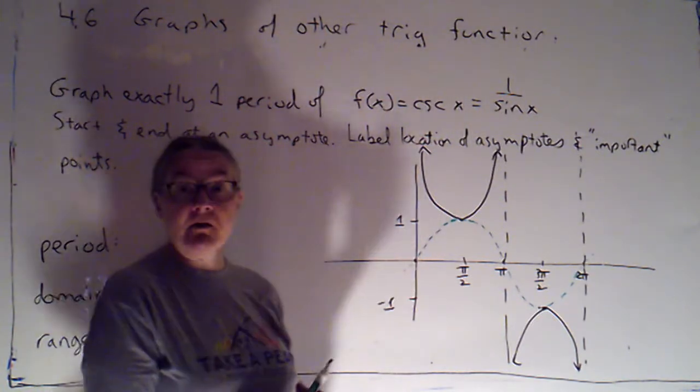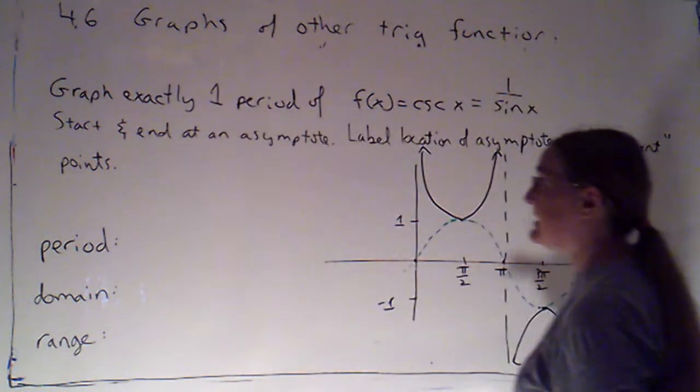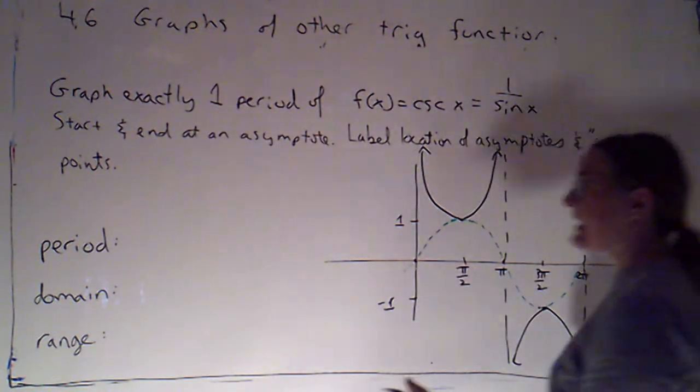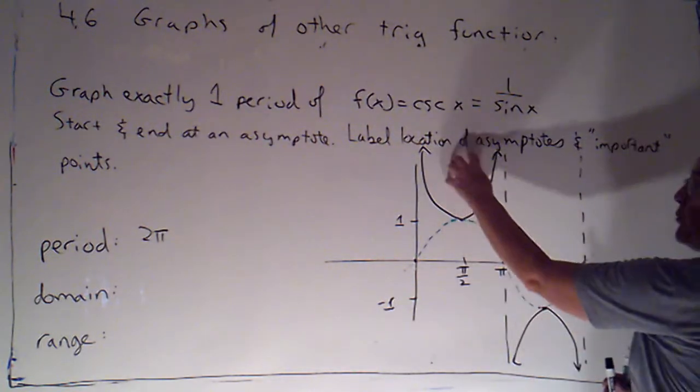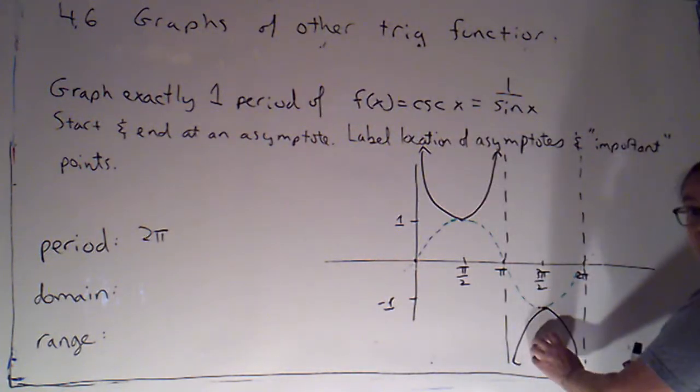So very similar to what we saw with secant, the period is again going to be two pi. The period is going to consist of one u that opens up and one u that opens down.